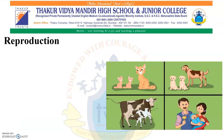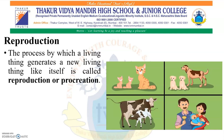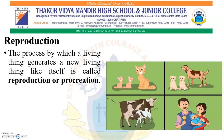The next characteristic is reproduction. The process by which a living thing generates a new living thing like itself is called reproduction or procreation. Various living organisms generate new living things like themselves — cats produce kittens, dogs produce puppies, cows produce calves, and humans produce babies.